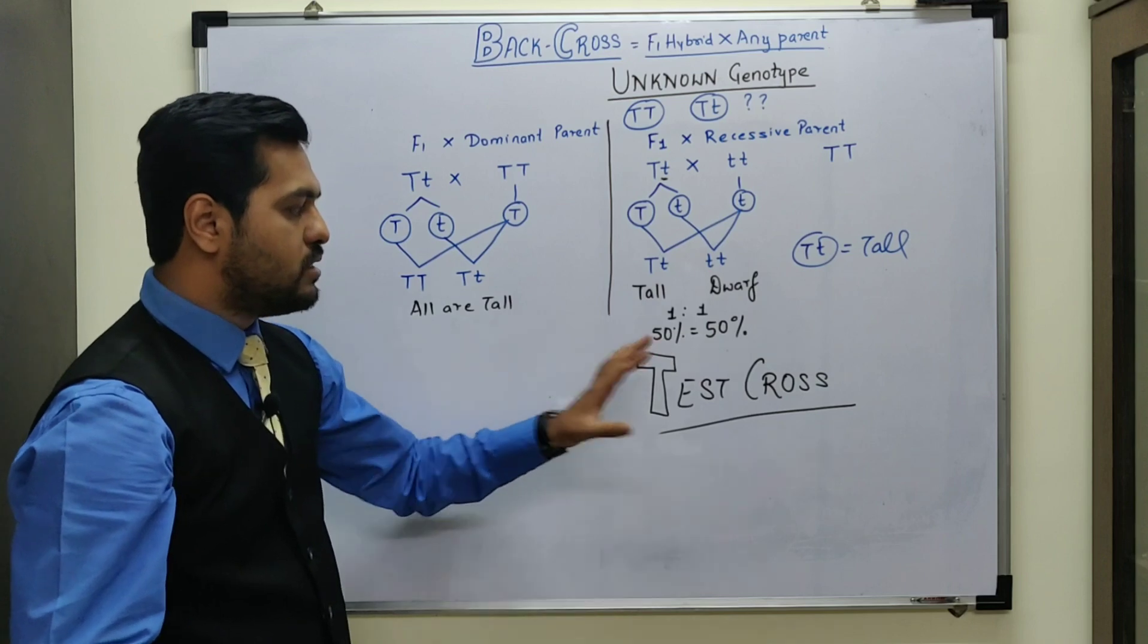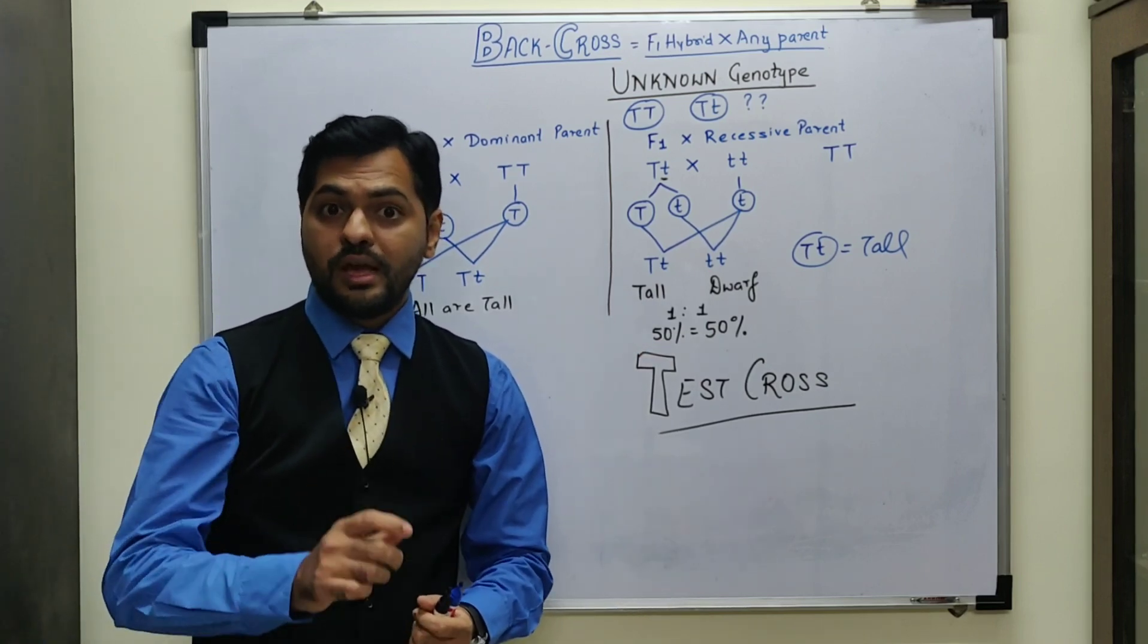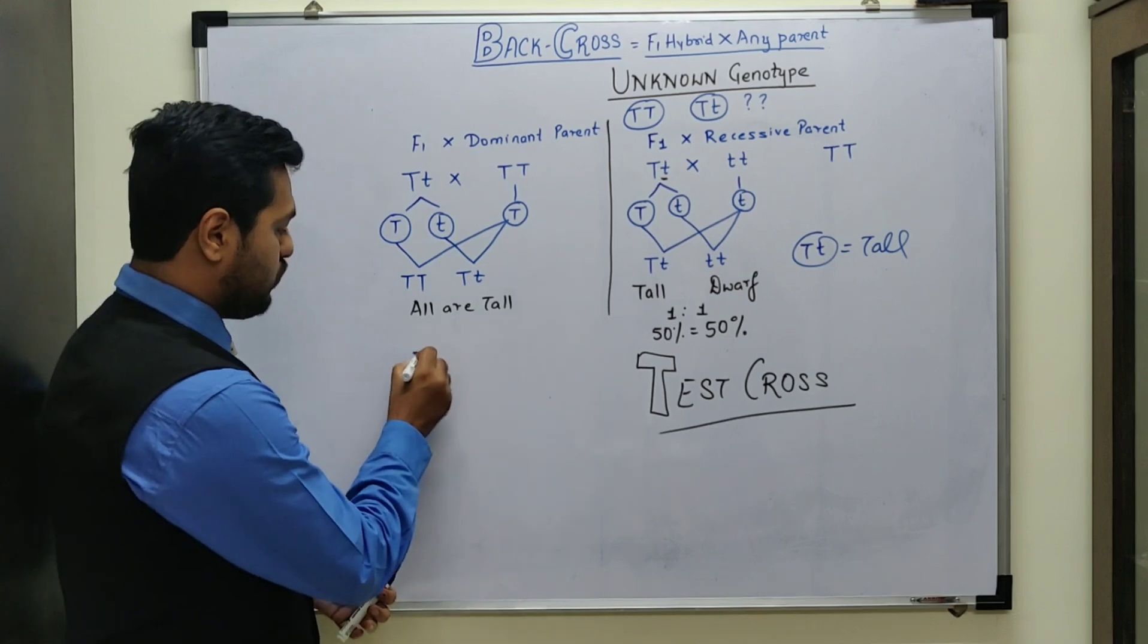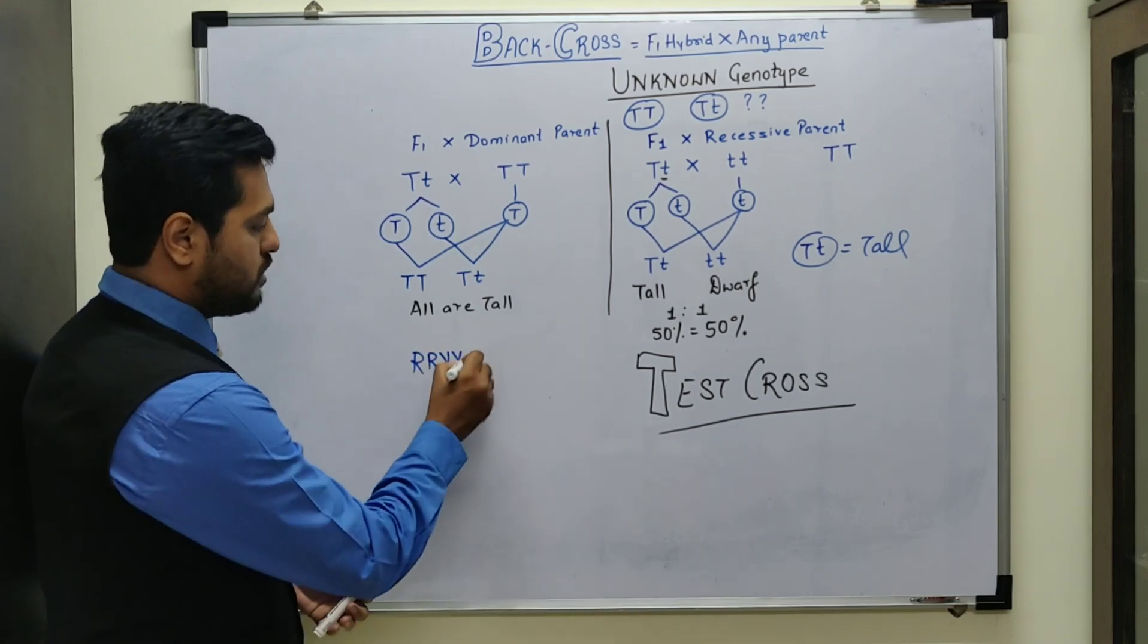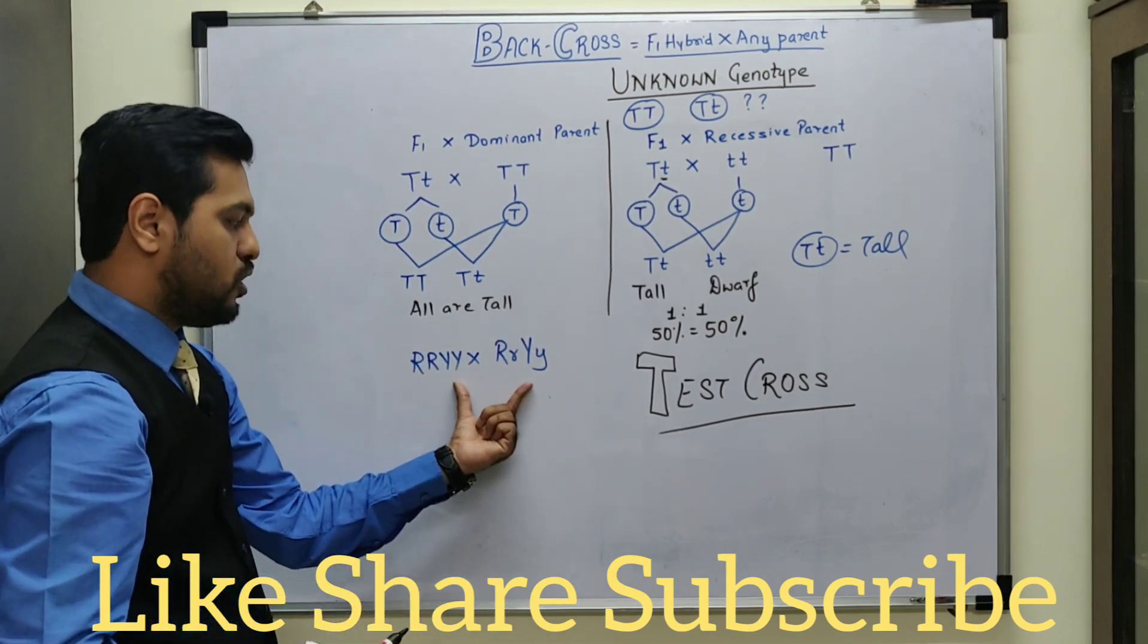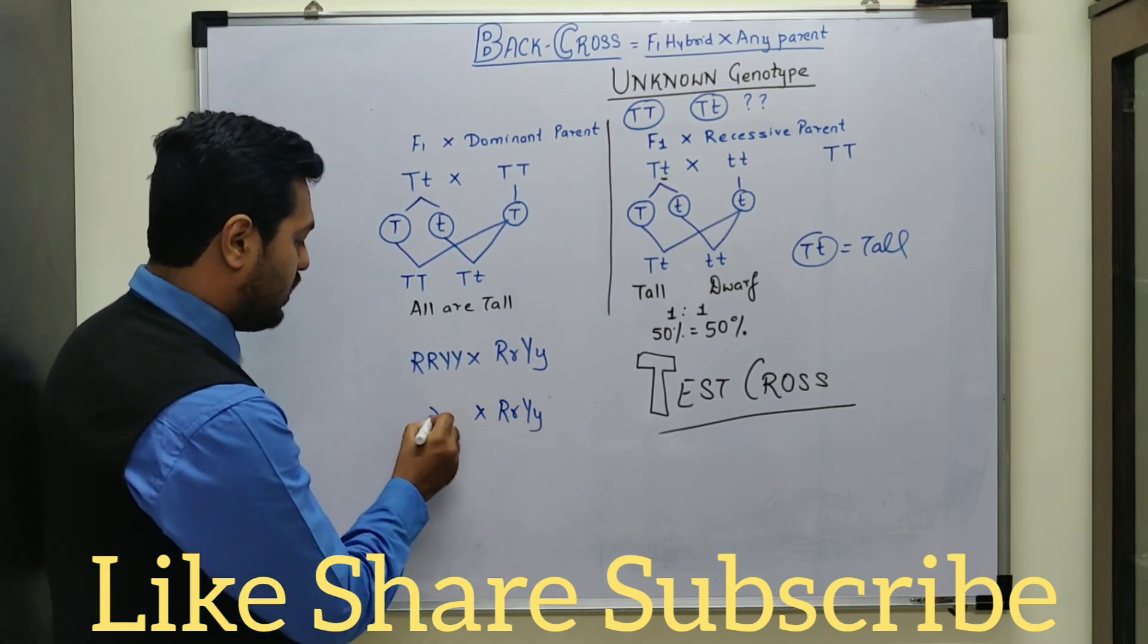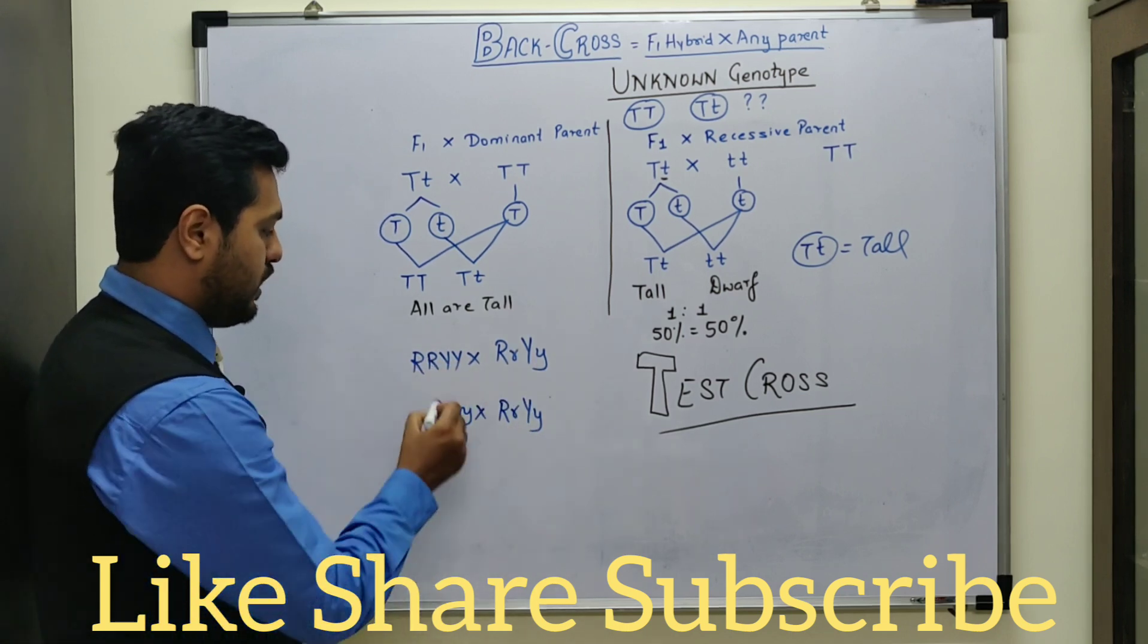So this is a monohybrid test cross. One assignment that I am giving you is, can you perform the back cross and test cross with a dihybrid? Yes, that is also possible. So suppose if you take this dominant parent and crossing with a hybrid, capital R small R capital Y small Y. So this definitely is a dominant back cross. If we are doing it in the form of a test cross, then the F1 hybrid with the recessive parent. So this is the F1, this is the dominant, F1 and the recessive parent.